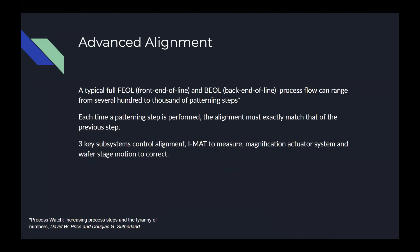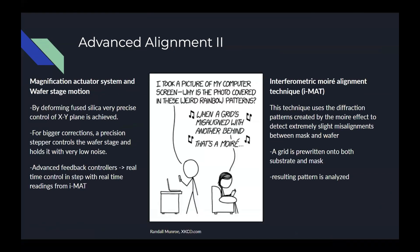UV nanoimprint lithography systems typically use three key subsystems to achieve alignment. The systems that actually move the wafer are the magnification actuator and wafer stepper. The stepper handles larger movements and also ensures that very little seismic noise makes it to the wafer stage. The magnification actuator makes extremely small movements in the XY plane possible through a controlled deformation of fused silica. All these adjustments are done in real time during the process.